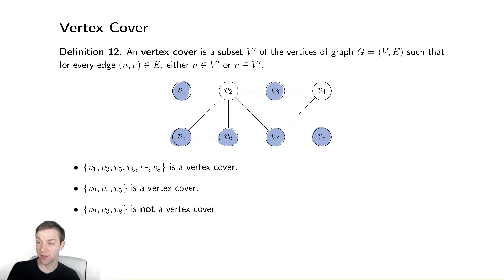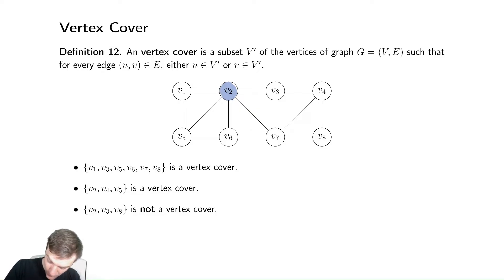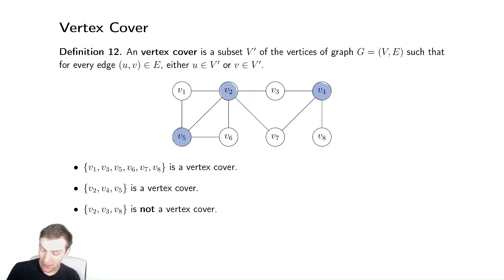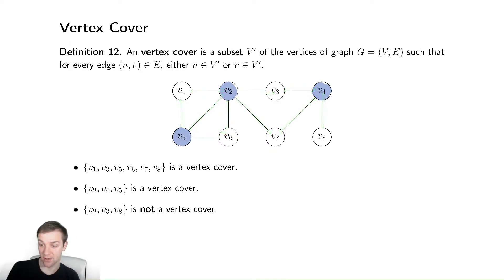Can we find a smaller one? Let's try and remove some of these and see what we can do. What if I looked at V2, V4, V5? Let's check all of our edges — each one touches a blue node. Yes, it's a vertex cover.